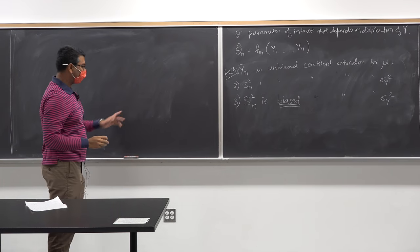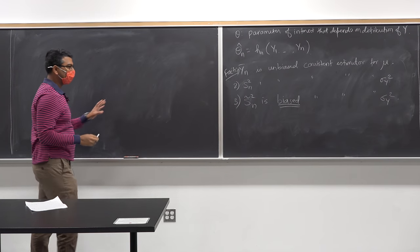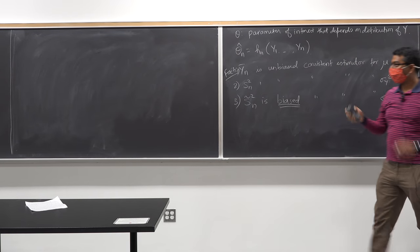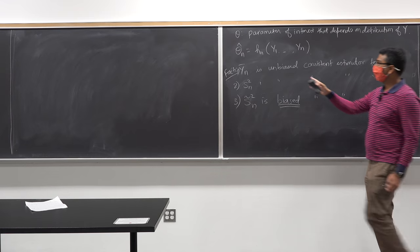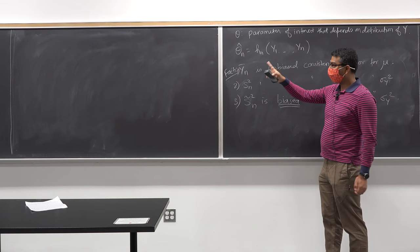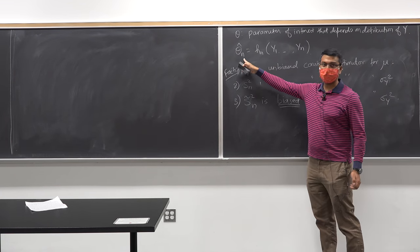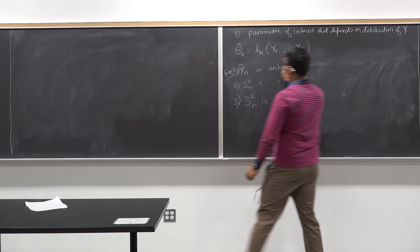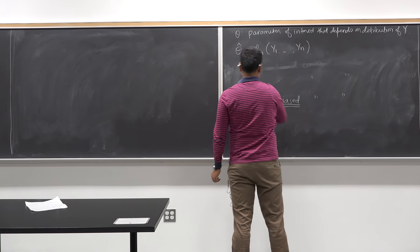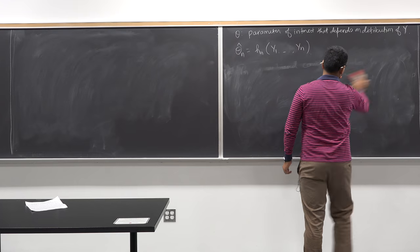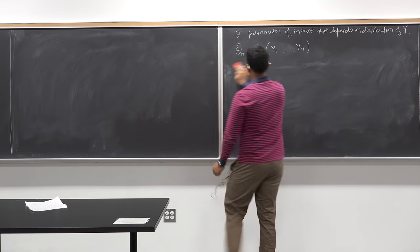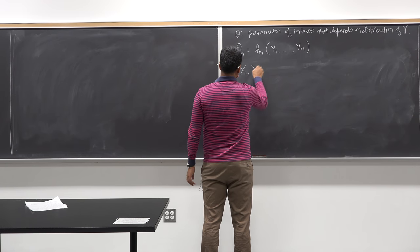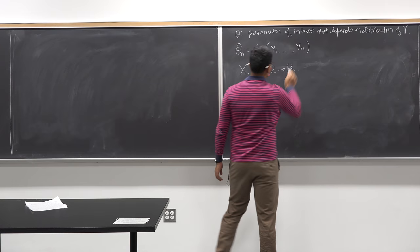Before moving to hypothesis testing, let me make a small remark. So far we have argued: I have y, a random variable; I have samples of y; I want to estimate some parameter of y's distribution. But in reality, sometimes I have two correlated random variables, x and y — omega to R — with a joint distribution, and I want to estimate theta_x but I only have samples from y.